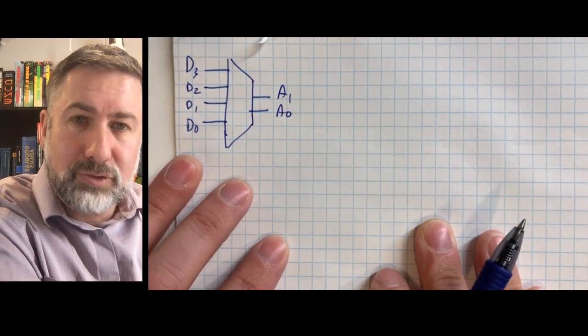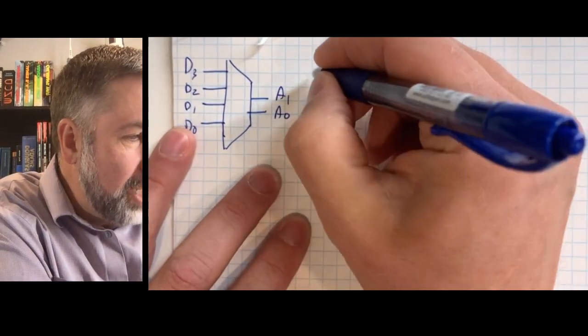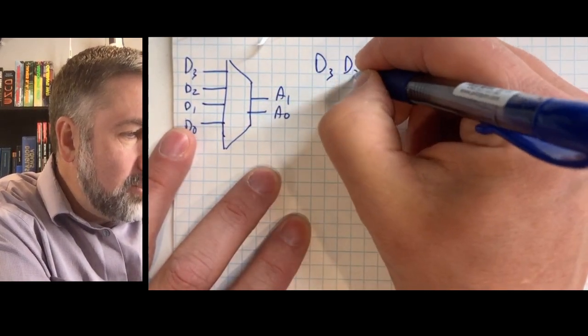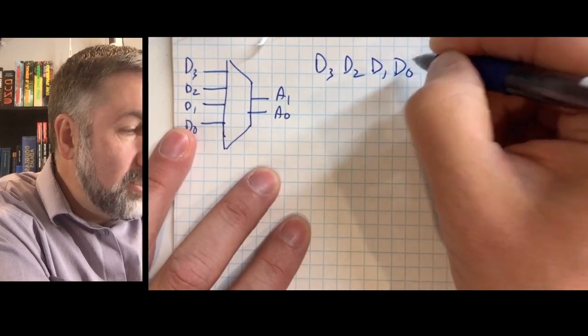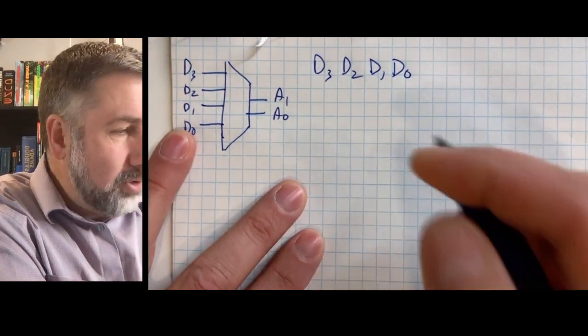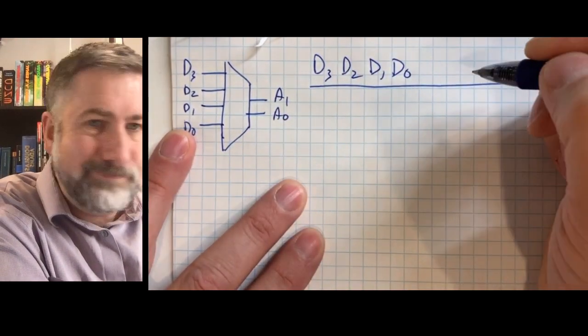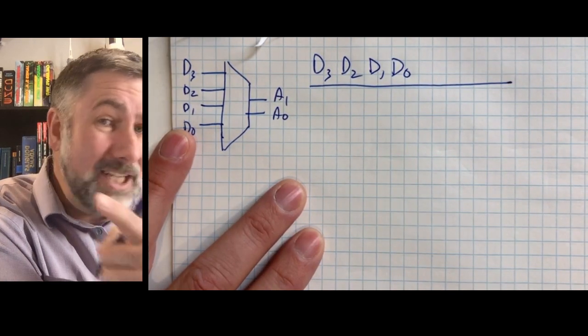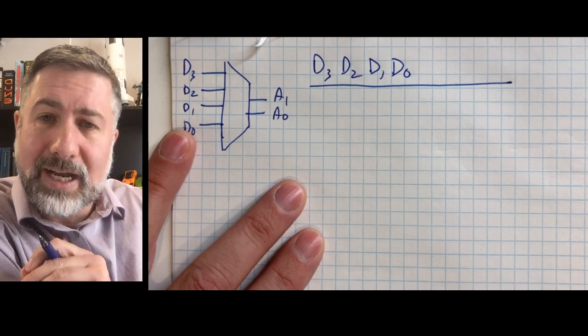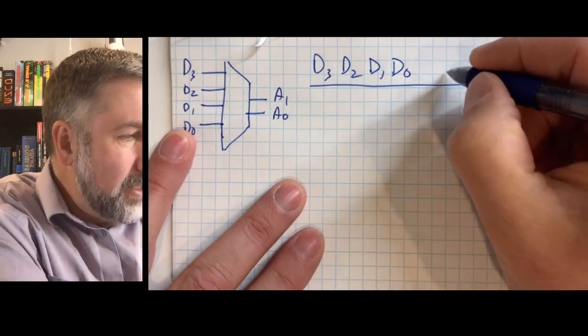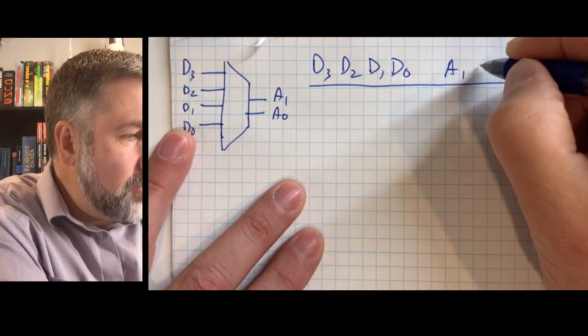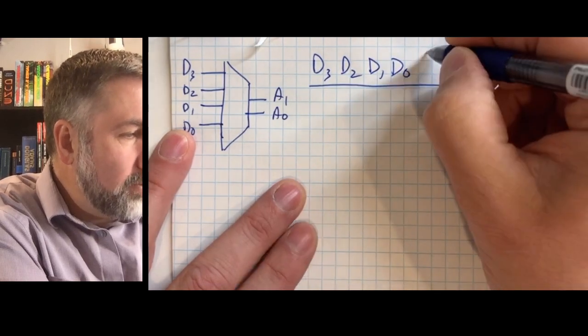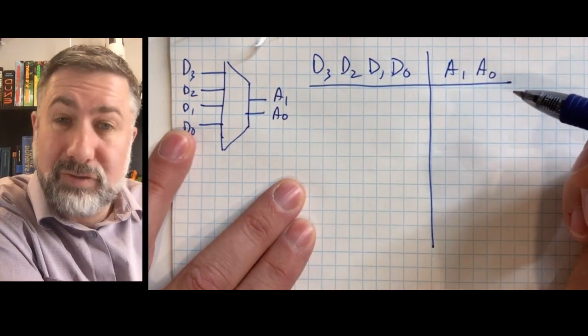Well, let's draw out the full truth table. Now if we draw out a truth table D3, D2, D1, D0, how many input combinations are there? Well, there's 16. That's a big long table, but let's recognize that most of those are actually don't cares because we want to have the situation where only one of those is active at a time. There's only four of those.